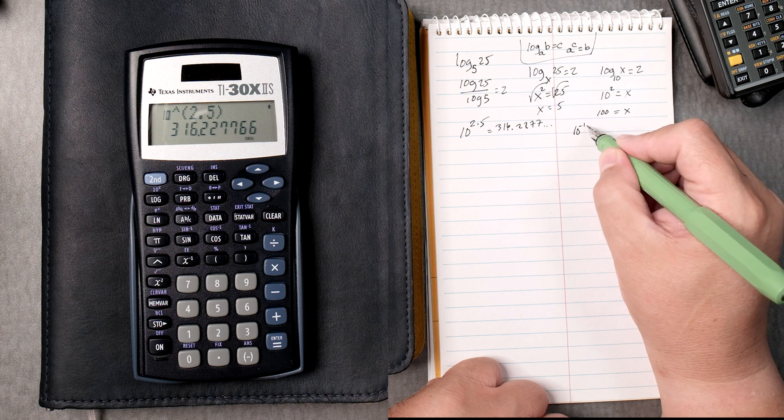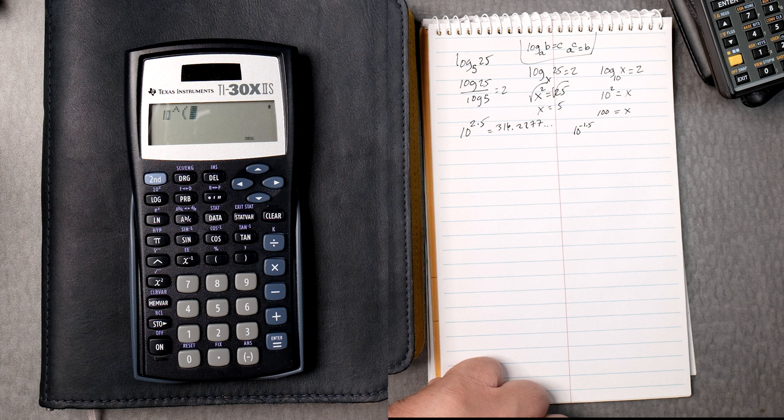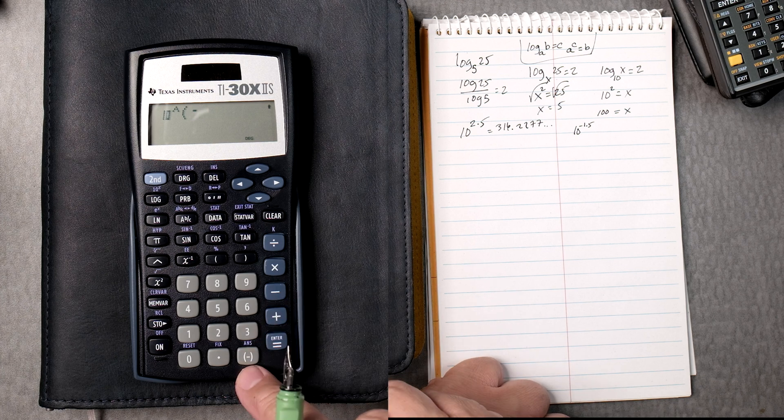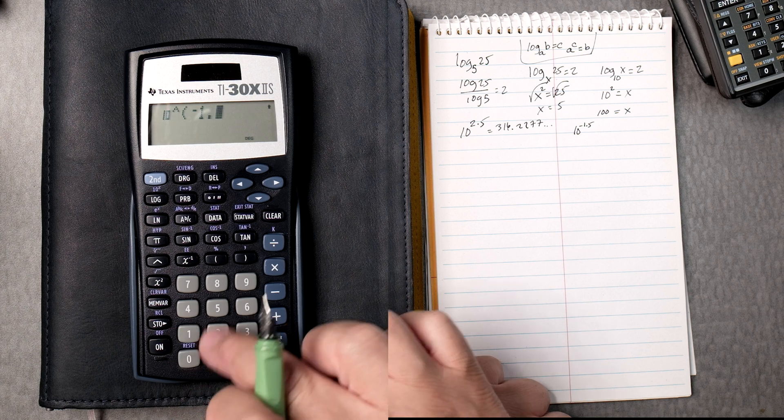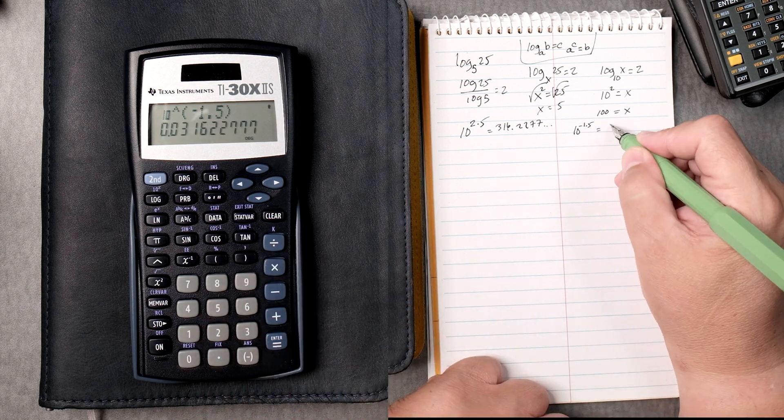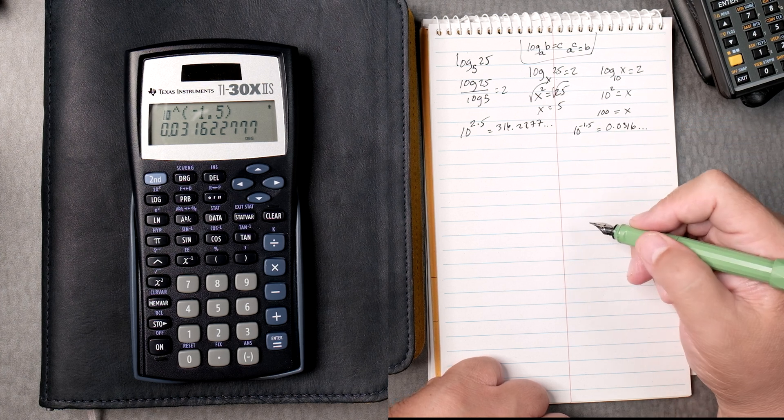10 to the minus 1.5, same thing, second, log, and then you can press negative, not minus, negative. 1.5, close it if you like, equals, and that gives you 0.0316, and so forth.